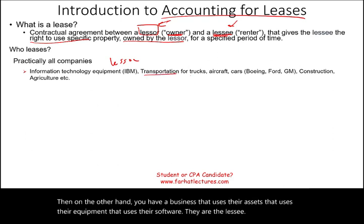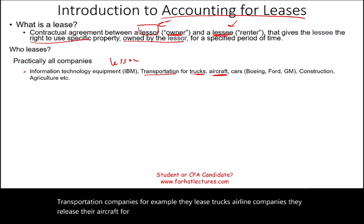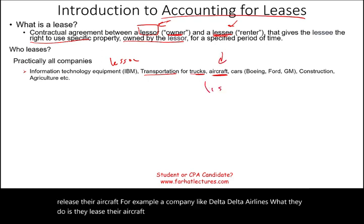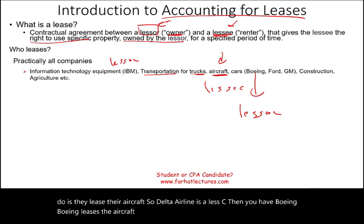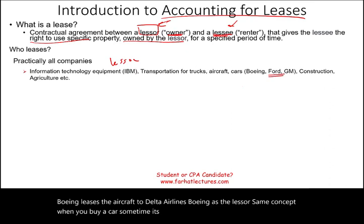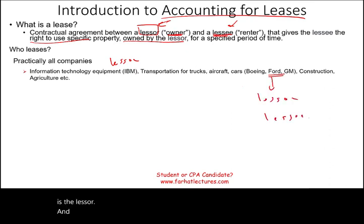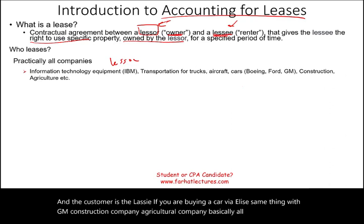Transportation companies lease trucks. Airline companies lease their aircraft. For example, a company like Delta Airlines leases their aircraft, so Delta is a lessee. Then you have Boeing, which leases the aircraft to Delta Airlines — Boeing is the lessor. Same concept with cars: Ford Motor Company is the lessor and the customer is the lessee if buying via a lease. Basically, all companies are either a lessor or a lessee.